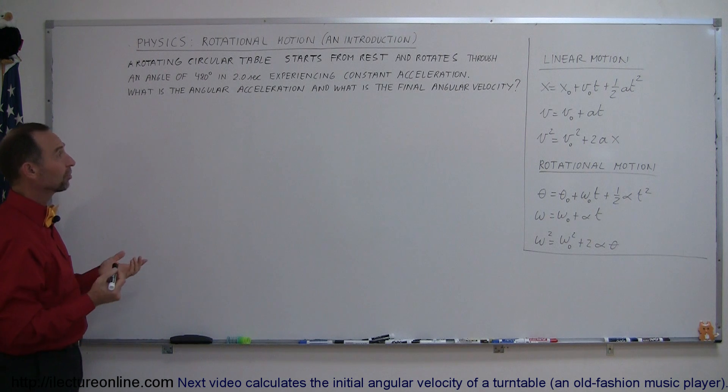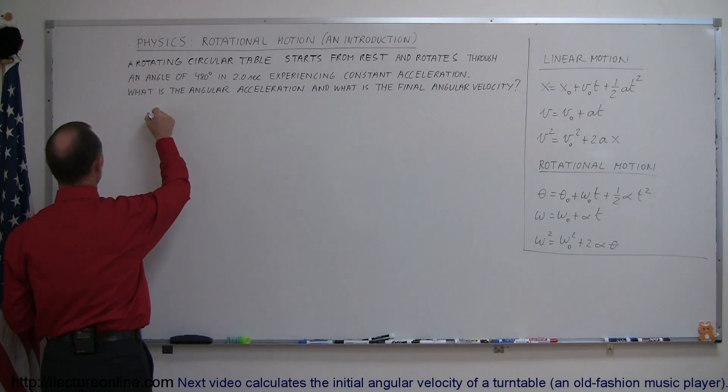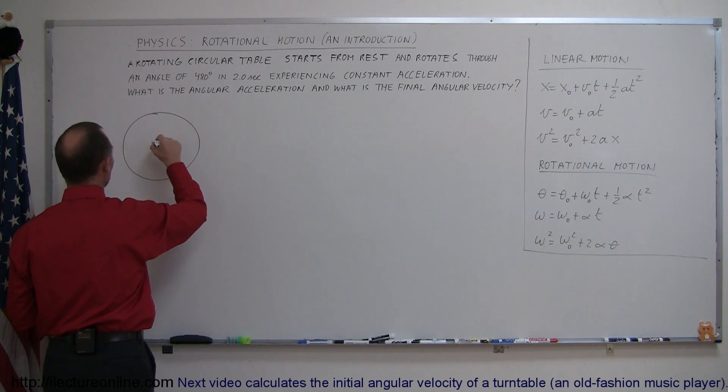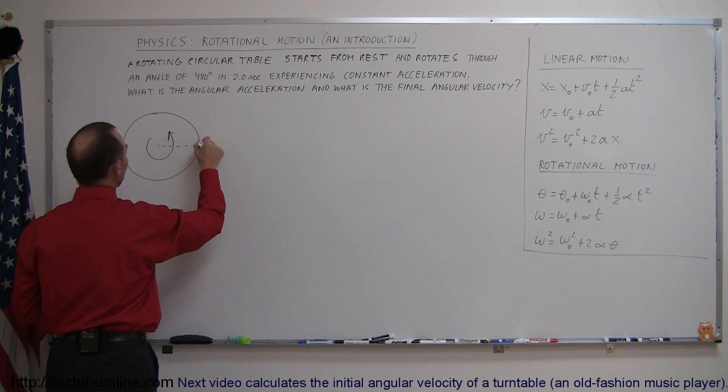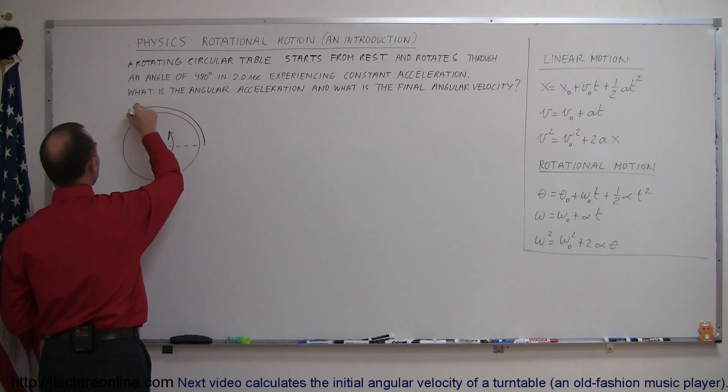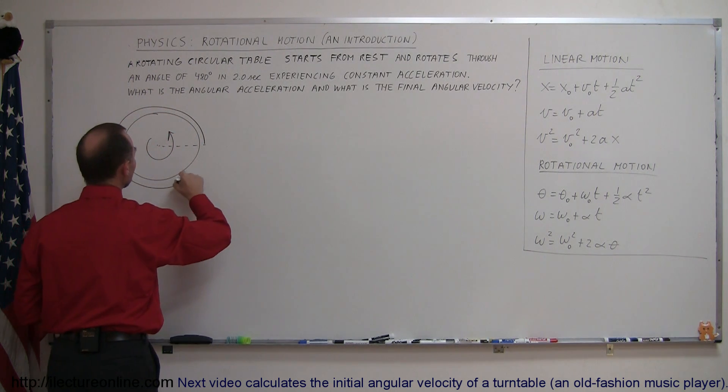So where do we start? Let's draw a picture so we know what's going on. We have a rotational table that can rotate like this. It starts at a certain point and travels through an angle of 480 degrees.